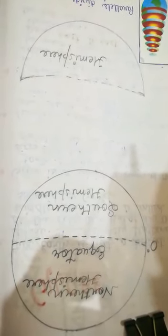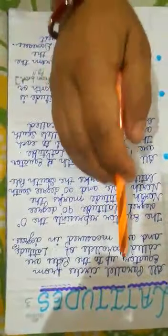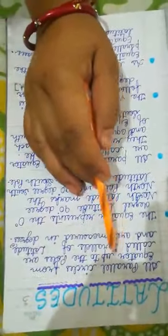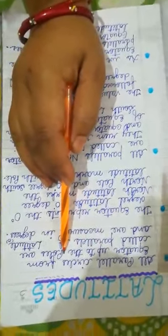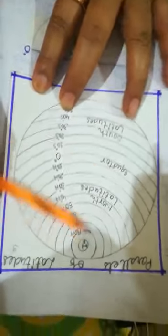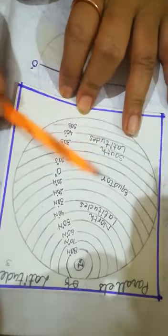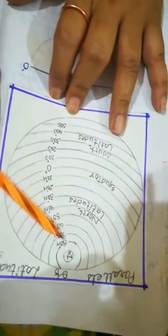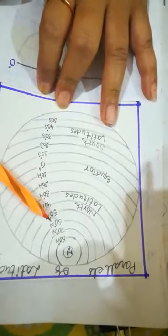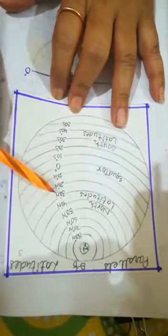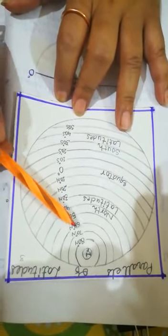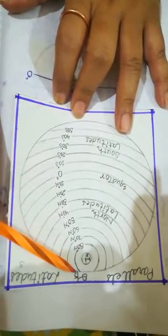Our next imaginary lines are latitudes. All parallel circles from the equator up to the poles — from the equator to the north pole and to the south pole — are called parallels of latitude and are measured in degrees: 10, 20, 30, 40... Zero degree is the equator, then moving toward the poles.